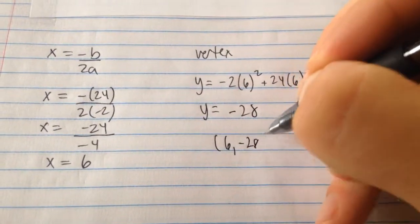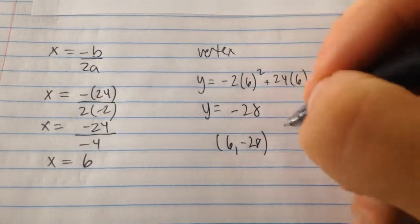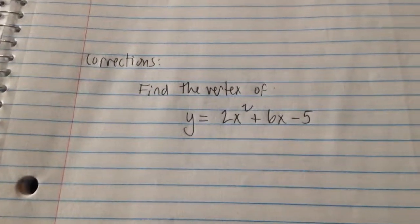Therefore, your vertex is 6, negative 28. Try this one.